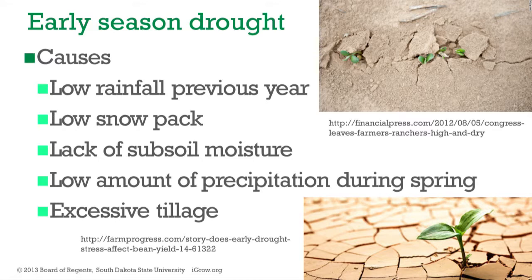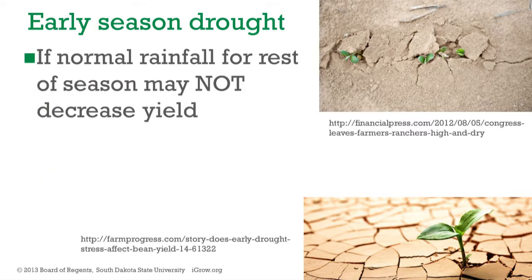Causes of early season drought include low rainfall, low snowpack, lack of subsurface moisture, low precipitation during spring, or excessive tillage. If you look at pictures of drought-affected fields, you'll notice that a lot of them don't have any cover or residue at all. So one of the things you should think about is keeping your residue there.